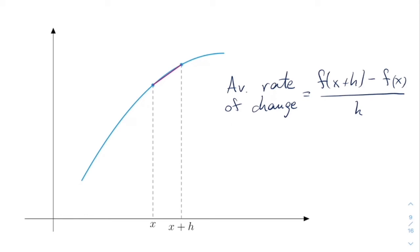It will be the limit when h goes to zero of the average rate of change. Let's try to see that written down.